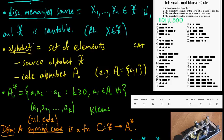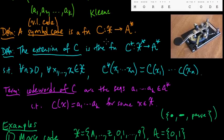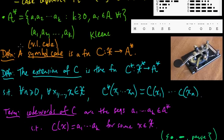And then we defined what a symbol code is, or a variable length code. And that was just a function C from our source alphabet to codewords. We referred to these, the elements of A star in the image of C, as codewords. So these were the sequences of symbols a1 up to ak where each ai was in our code alphabet A.